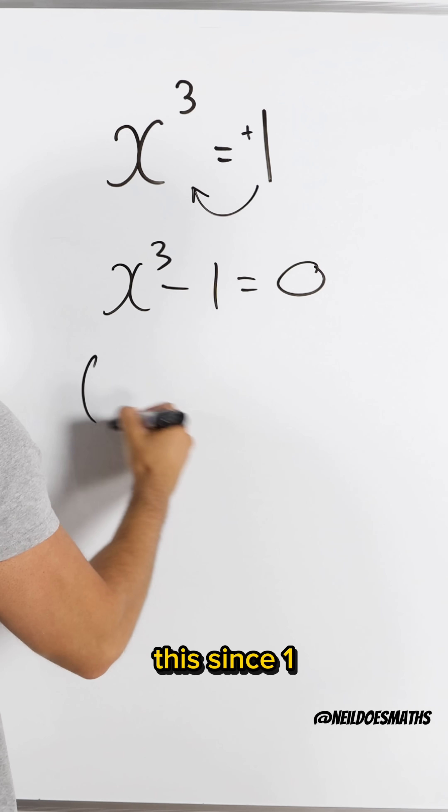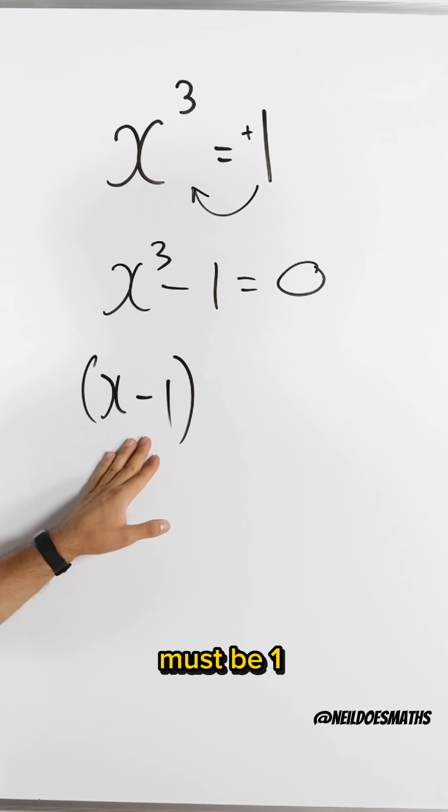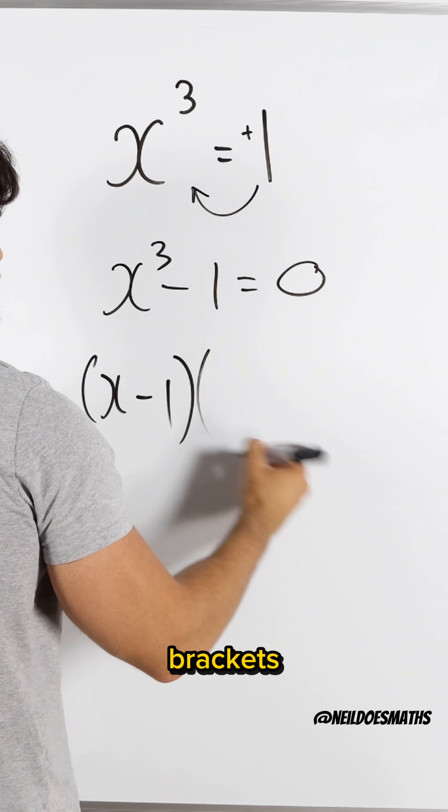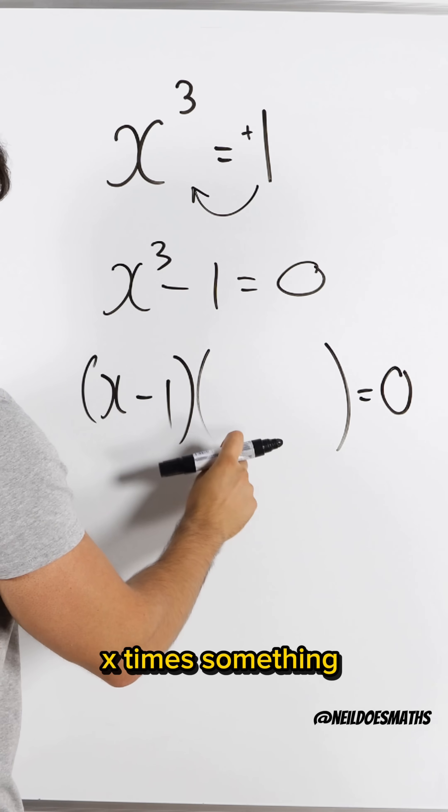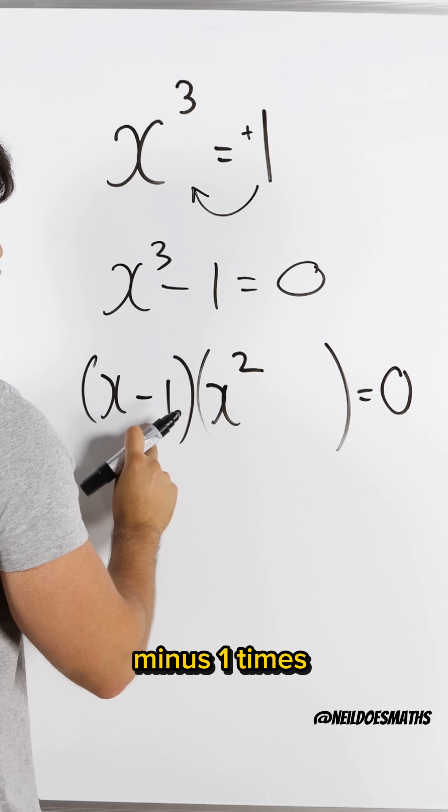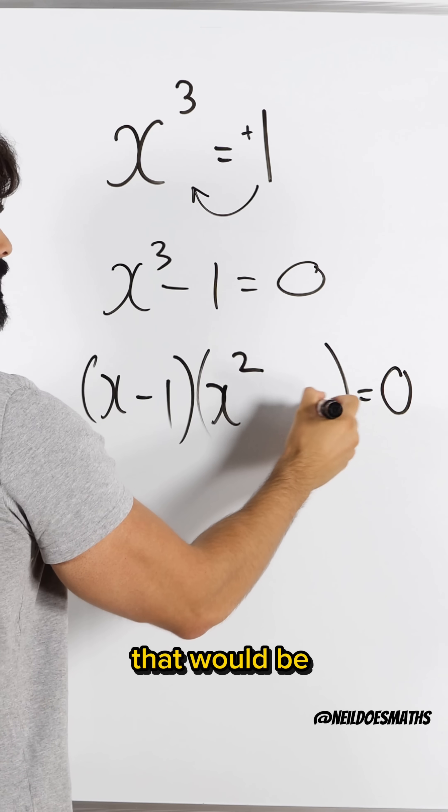When I factorize this, since 1 is one of my roots, x minus 1 must be one of the other brackets. So what must the other one be? Factorizing, x times something is x cubed, that's x squared. Minus 1 times something is minus 1, that would be plus 1.